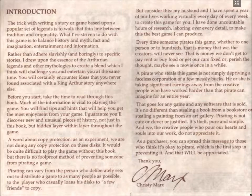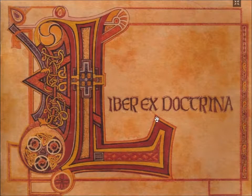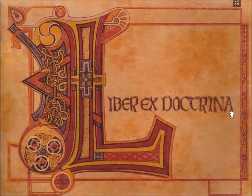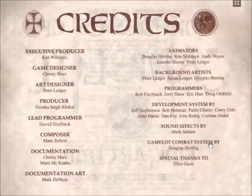This isn't going to be a very long or very involved look at the manual, because the manual has a lot of information. But I want to get a sense across of how important the manual is to the game. Here's the opening page. This is the Libra Extra Catrina, and then we've got the Conquest at Camelot. Obviously, this is the actual Instant Manual — King Arthur, The Search for the Grail.